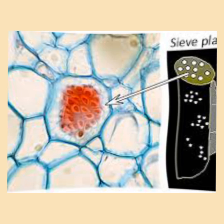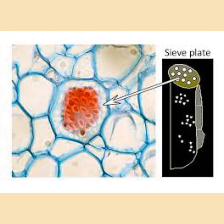Sieve plates have large pores that allow sap to move through the sieve tube elements. These sieve plates are present at the end of each sieve tube element, allowing sugars to be transported through the phloem.